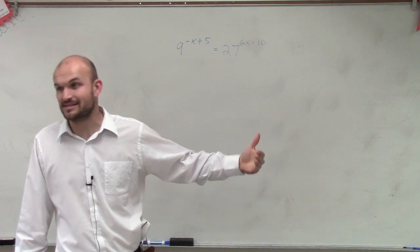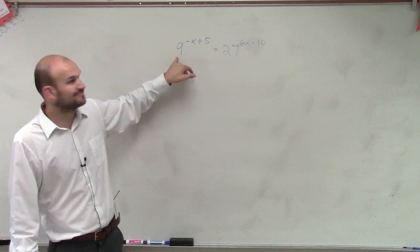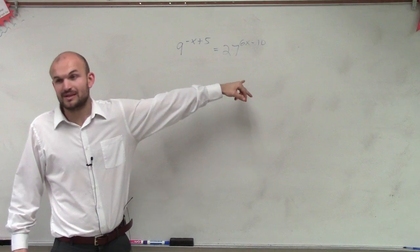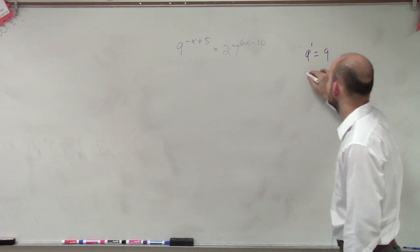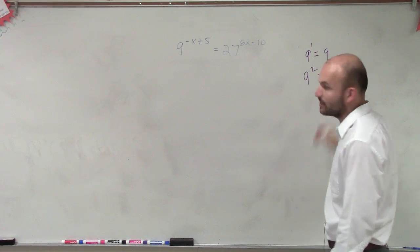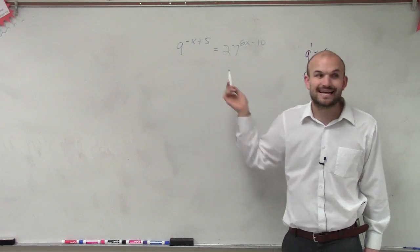Again, ladies and gentlemen, we need to find the same base. You could say, well, let's see if we can rewrite 27 as 9, right? We have 9 to the first power equals 9. 9 squared, though, equals 81. So guess what? Using base 9 is not going to work.